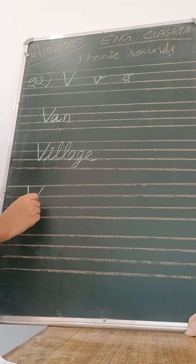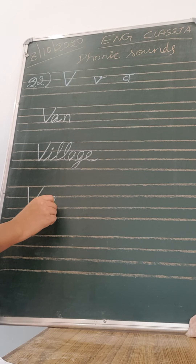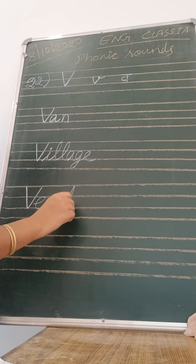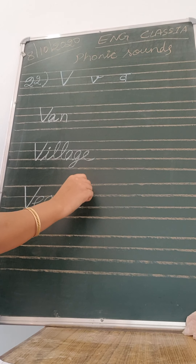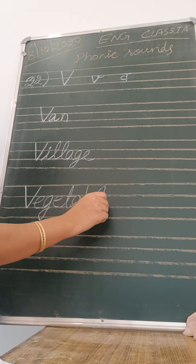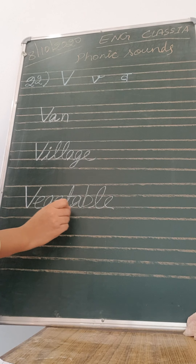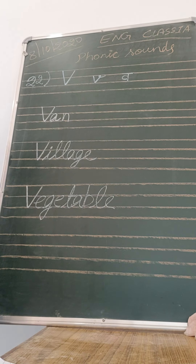V is for vegetable — wah, wah, wah. Vegetable. V is for vegetable.